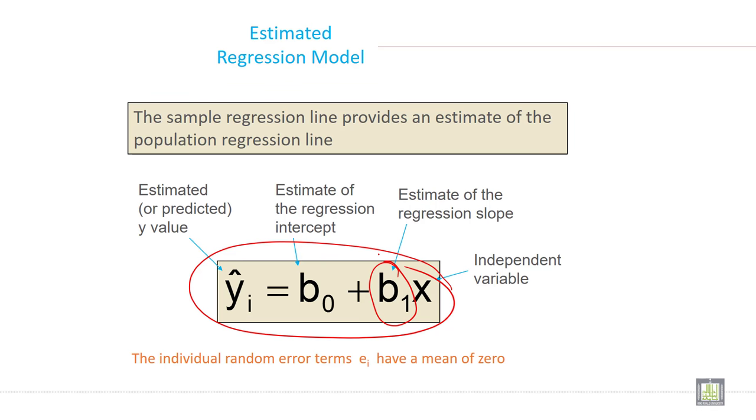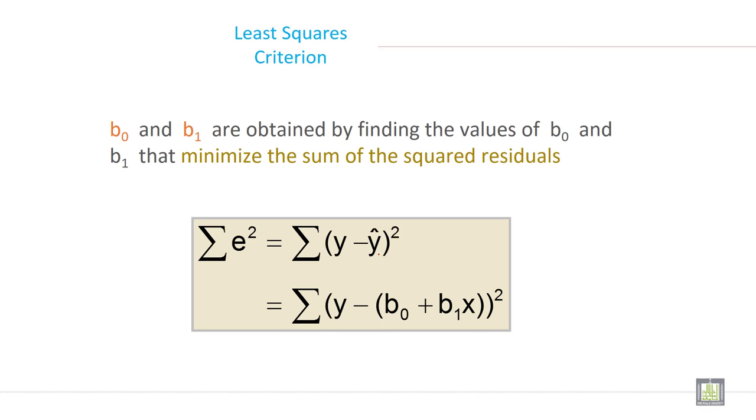The individual random error terms e have a mean of zero. b0 and b1 are obtained by finding the values that minimize the sum of the squared residuals. Sigma e squared equals the summation of (y minus y-hat) squared, which equals the summation of (y minus (b0 plus b1x)) squared. This is the least squares criterion method.